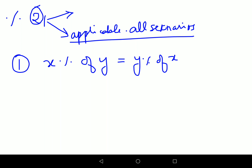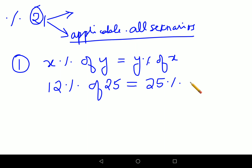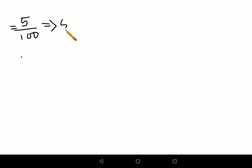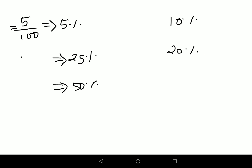If I want 12 percent of 25, that means I can also say 25 percent of 12. In percentages, whenever you have a percentage sign, you write it in fraction form as that number divided by 100. So: 5 percent is 5 upon 100, and 25 percent, 50 percent, 10 percent, and 20 percent all have simple fraction forms.